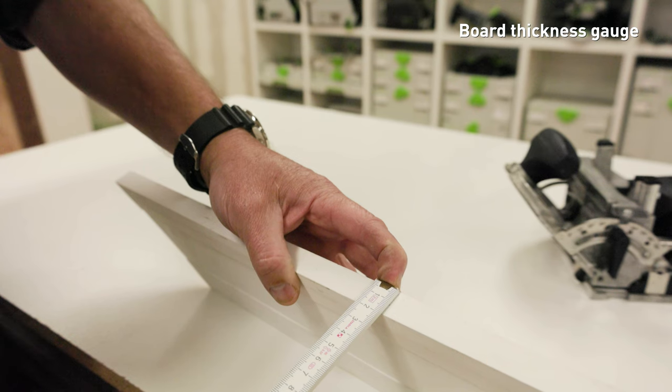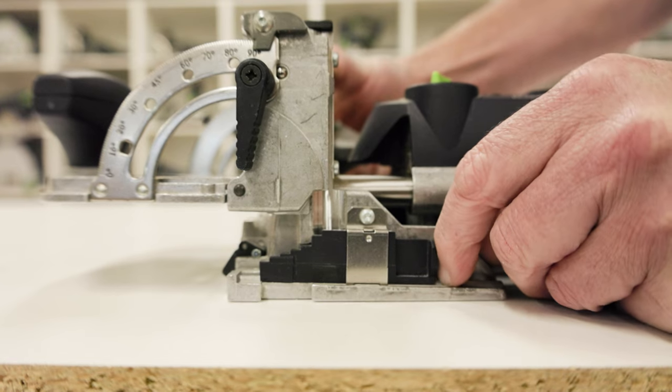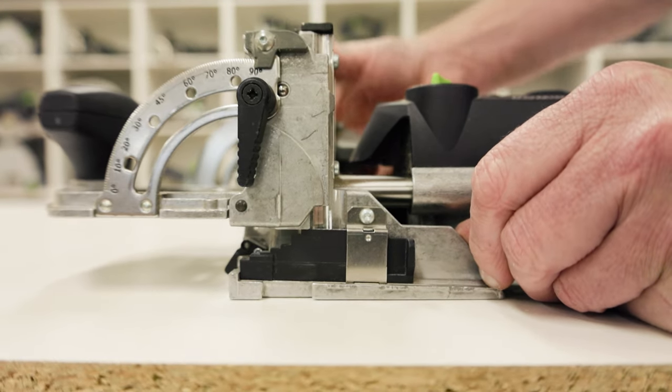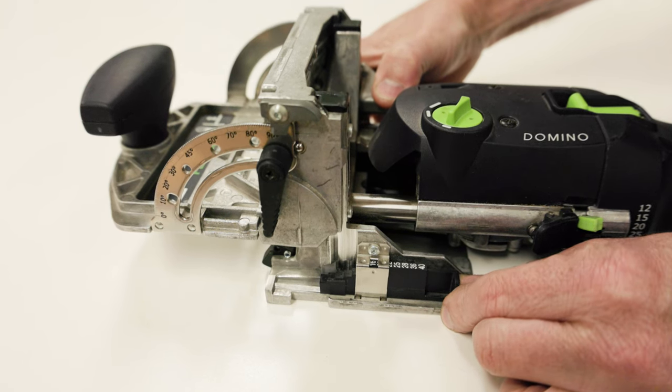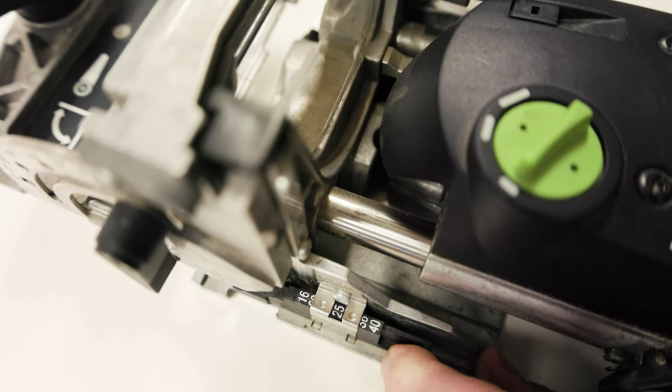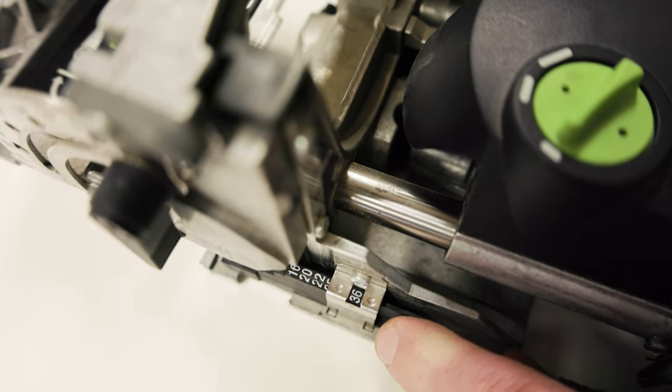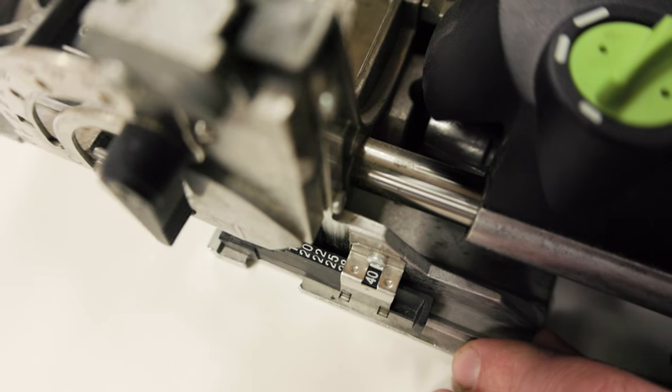The board thickness gauge represents the actual thickness of material being used and will position the cutter to half the thickness. There are height settings for 16, 20, 22, 25, 28, 36 and 40mm board thicknesses.